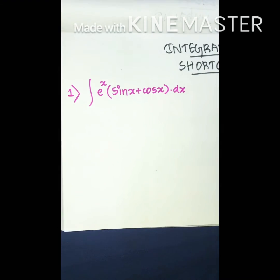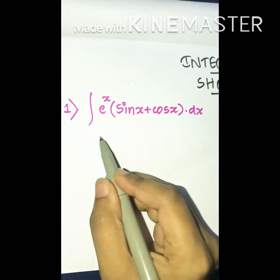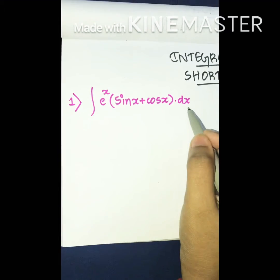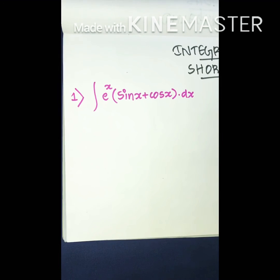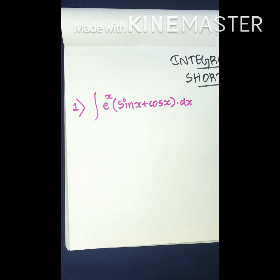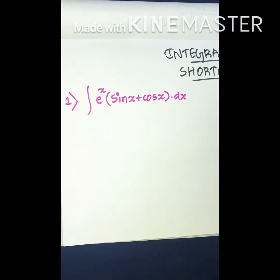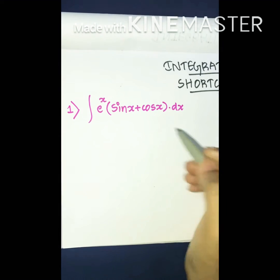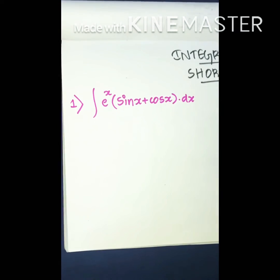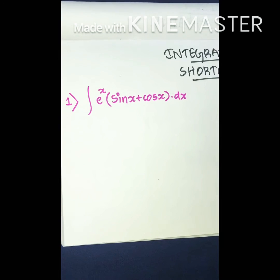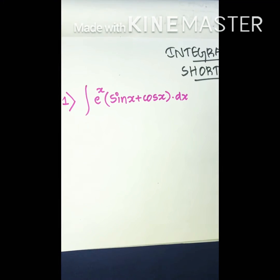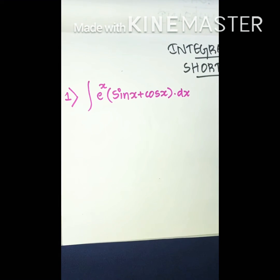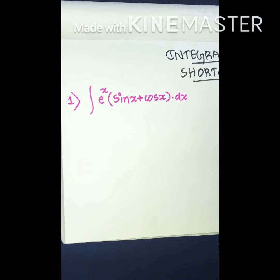Here is our first question: the integration of eˣ into (sin x + cos x) dx. If you try to solve this without using any shortcut, it will take a lot of time — you would multiply eˣ with the terms inside the brackets, split it, and apply the UV method. In an exam you won't have that much time, so let's use a shortcut.